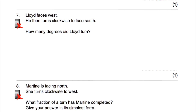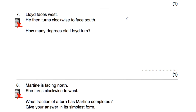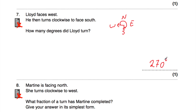Question seven: Lloyd is facing west — never eat shredded wheat, north, east, south, west — he's facing west, and he turns all the way to facing south. Rotating clockwise from west to south, he's going to be turning for three quarters of a turn, so that'll be 90, 180, and 270 degrees. So he turns through 270 degrees. If he went another 90 he'd be back to facing west, which would be a full turn of 360 degrees, but he's facing south, so it's 270 degrees.